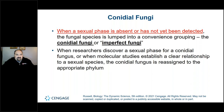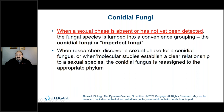Conidial fungi — also called imperfect fungi — are those where a sexual phase is absent and has not yet been detected. When researchers discover a sexual phase or when molecular studies establish a clear relationship to a sexual species, they'll be reassigned to an appropriate phylum.